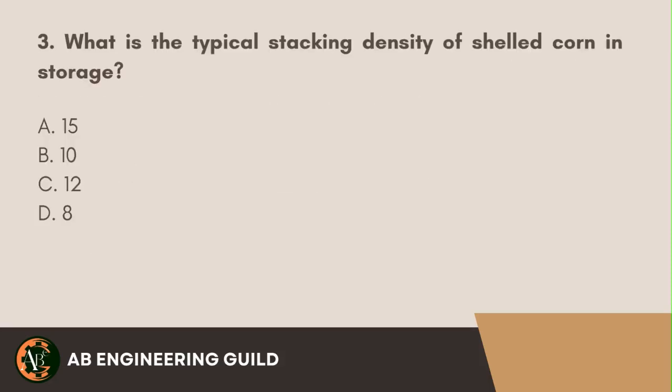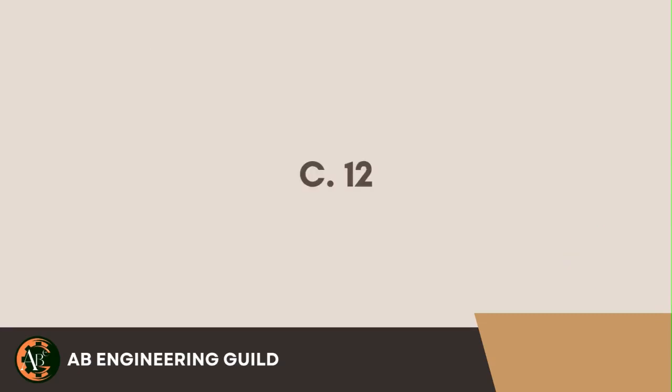Question 3. What is the typical stacking density of shelled corn in storage? A. 15. B. 10. C. 12. D. 8. Answer: C. 12.